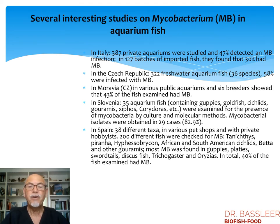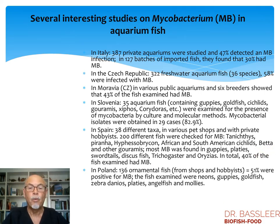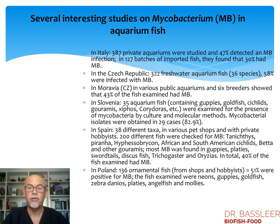In Spain, 38 different taxa in various pet shops and private hobbyists were examined — 200 different fish were checked for mycobacterium. Particularly guppies, platies, swordtails, discus fish, Trichogaster and Oryzias had mycobacterium, in total 40% of examined fish. In Poland, a study on 136 ornamental fish found 51% positive for mycobacterium — mostly neons, guppies, goldfish, zebrafish, platies, angelfish and mollies. So many common fish can be carriers of mycobacterium, and about 50% can show a mycobacterium infection, but not necessarily die.